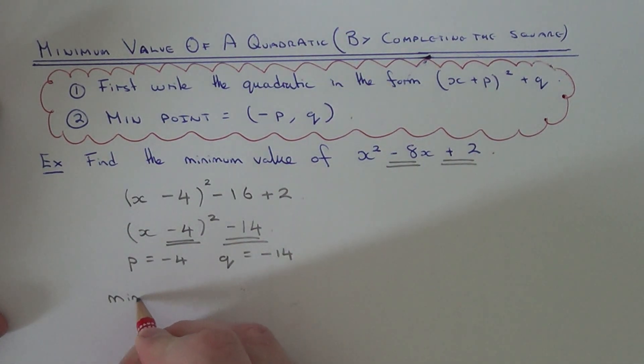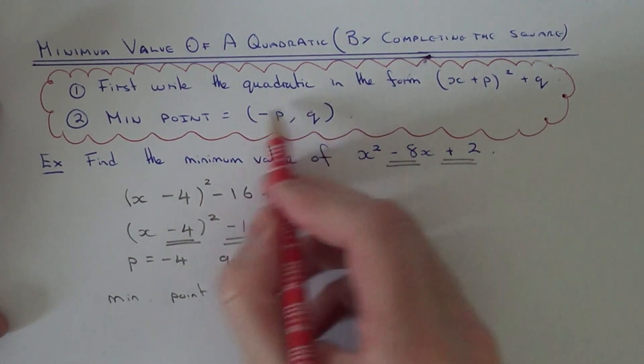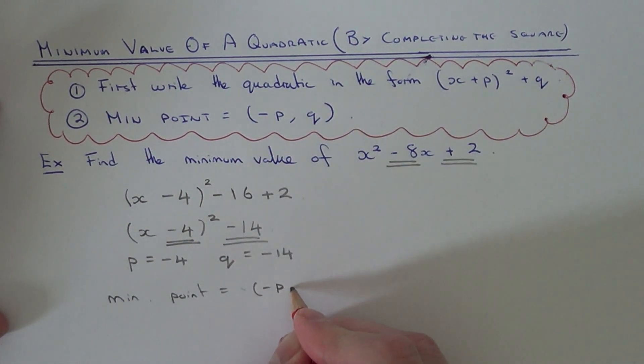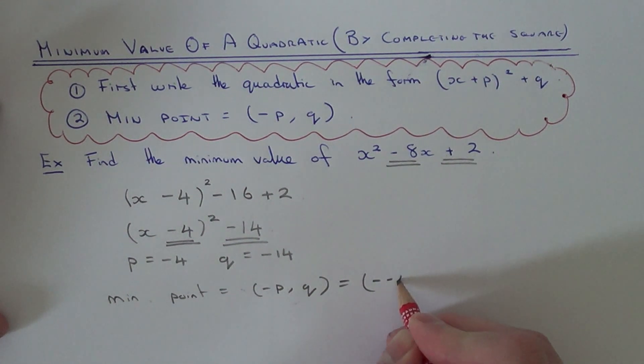So our minimum point is at minus p comma q. So if we put these values into the coordinate here it will be minus minus 4 comma minus 14.